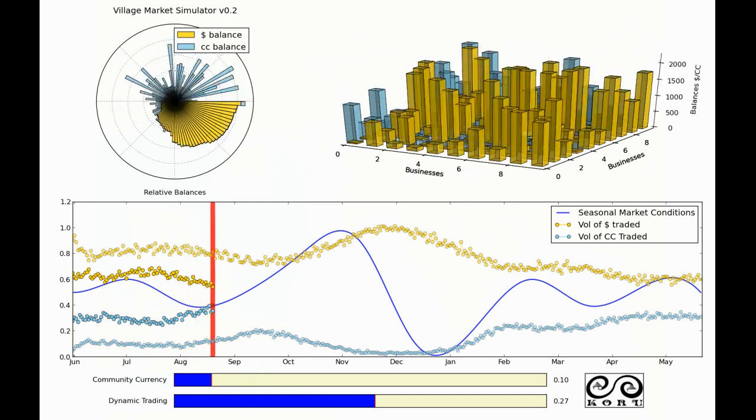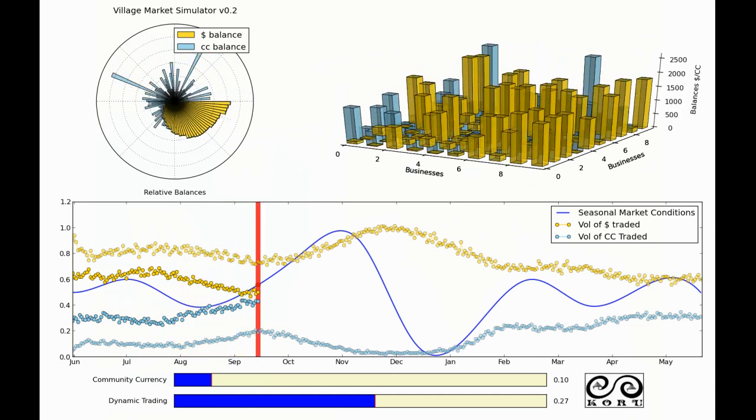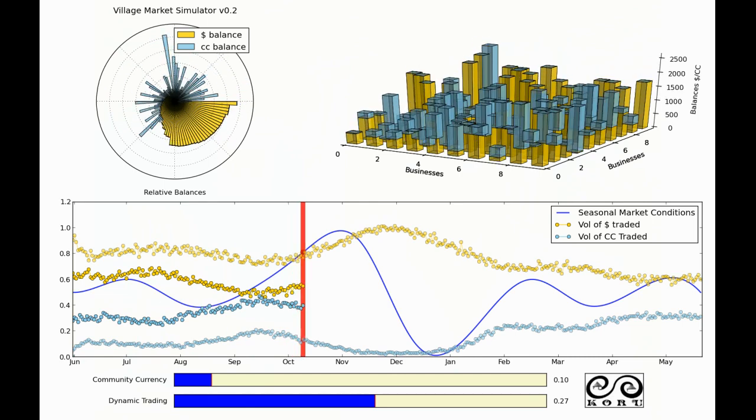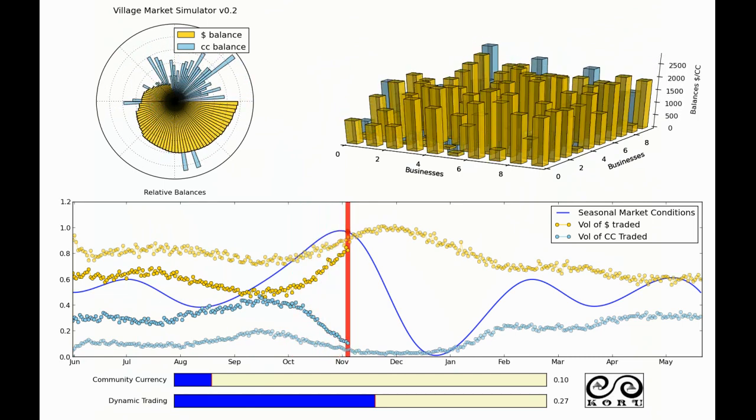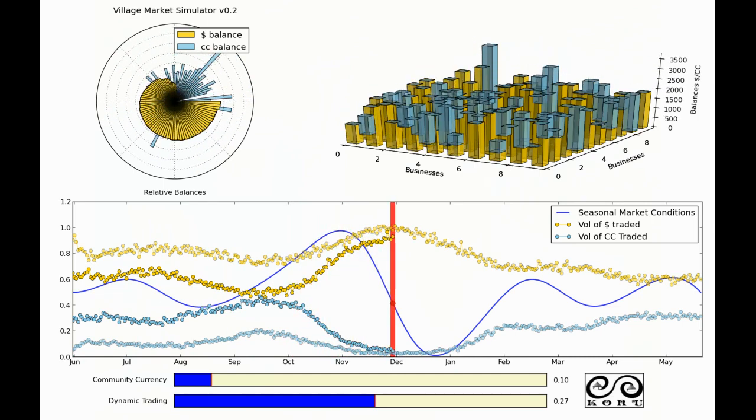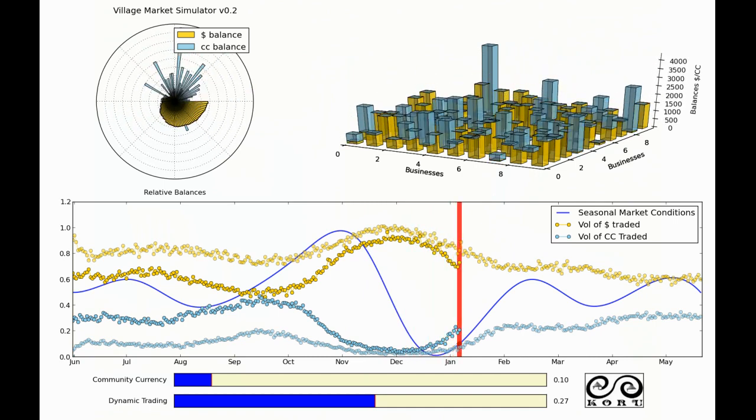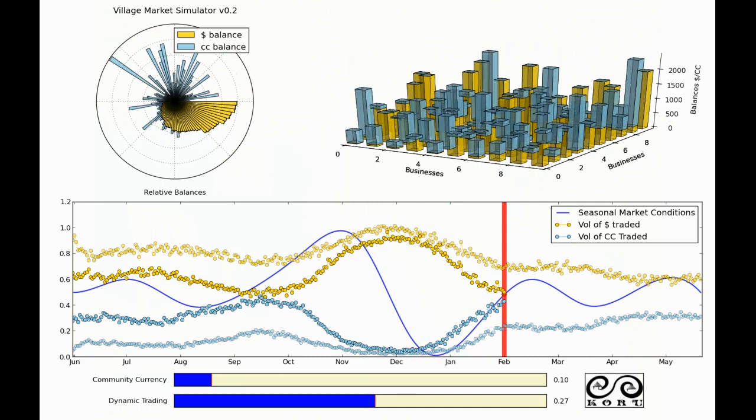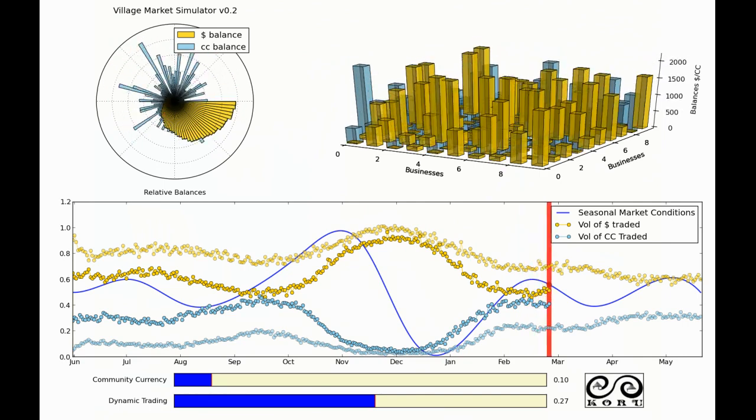So on the top here is the national currency and the bottom in blue is a community or local currency. And as you can see there's still this sort of oscillatory effect. There's more money around December and less money around January, and with the community currency people don't use it as much when they have more of the national currency. So it's sort of counter-cyclic when one's up the other's down.